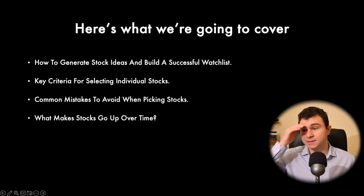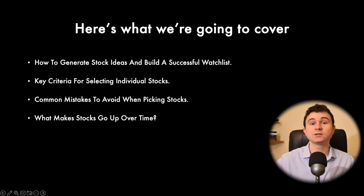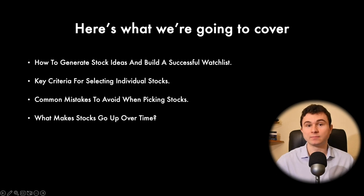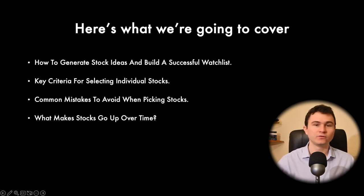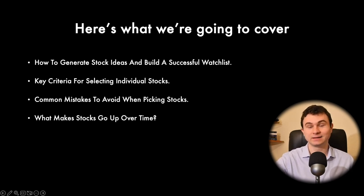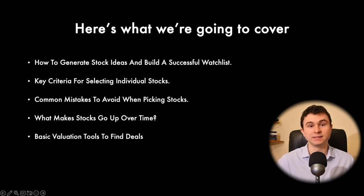There are also psychological mistakes you have to be aware of, because as I said in the previous video, investing is 20% brain and 80% temperament — so there will be plenty of traps to avoid. We will also see what makes stocks go up over time. There are key financial metrics that you can monitor over time, and if these metrics go up over 20 years, your stock is almost certain to go up as well. We will also go through the basic valuation tools to find deals.